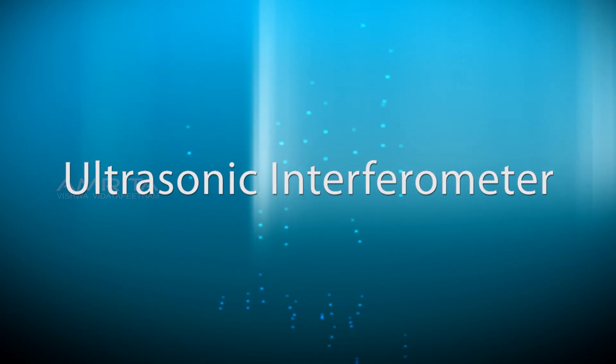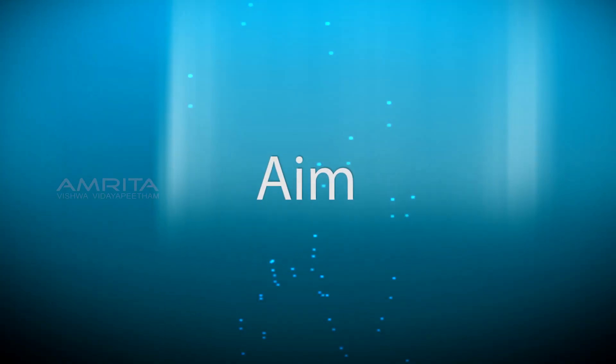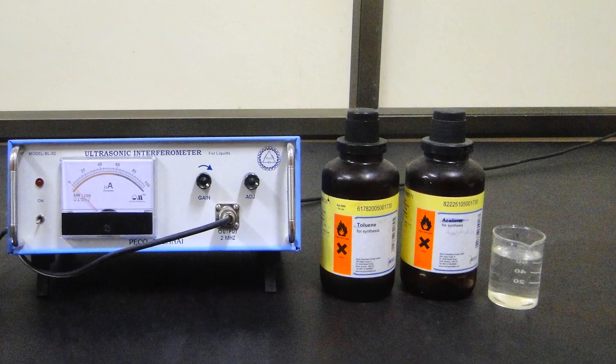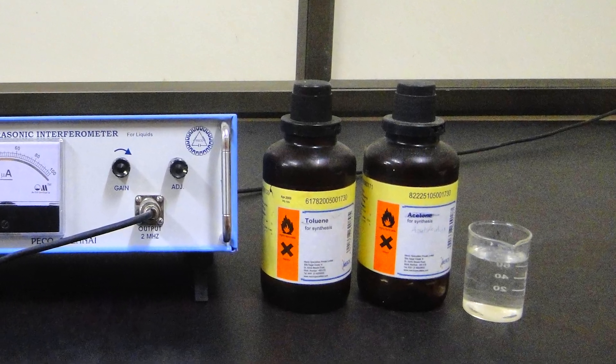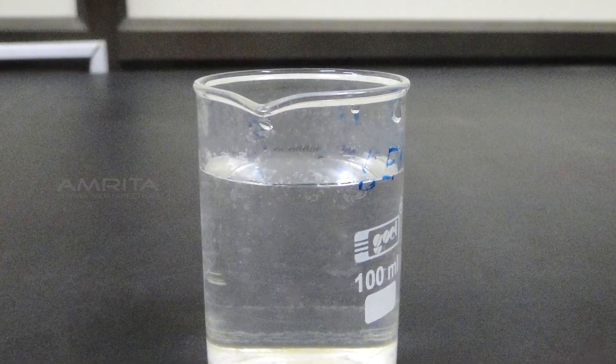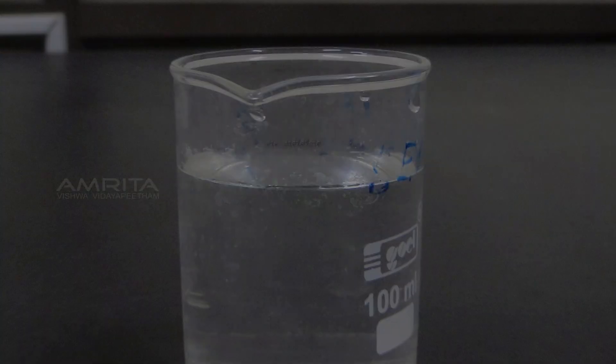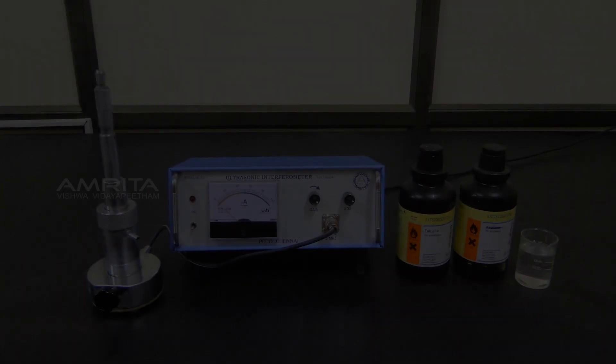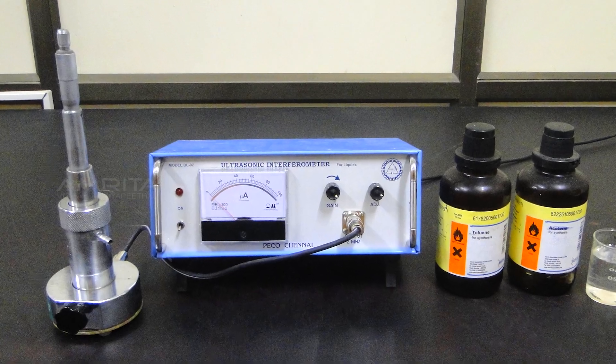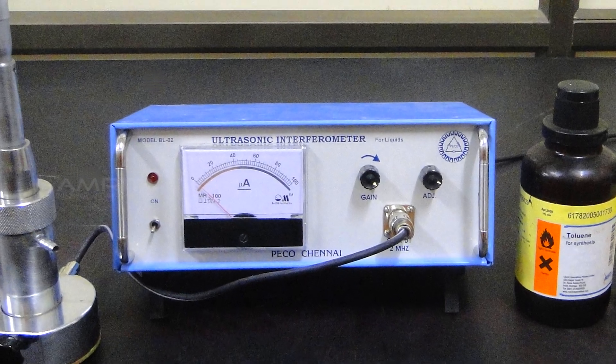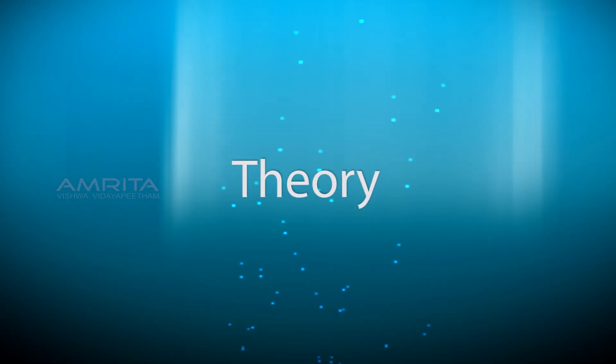Ultrasonic interferometer: Aim - to calculate the velocity of ultrasonic sound through different liquid mediums, and to calculate the adiabatic compressibility of the given liquid. Apparatus: ultrasonic interferometer, sample liquids, high frequency generator, etc.